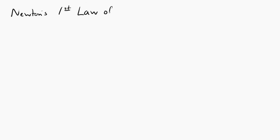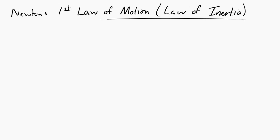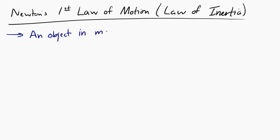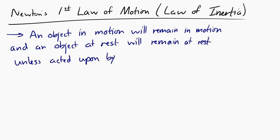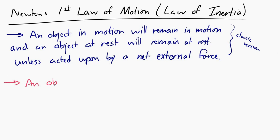Let's take a look at Newton's first law of motion, also called the law of inertia. A common way to state this law is: an object in motion will remain in motion and an object at rest will remain at rest unless acted upon by a net external force. Another way to state it would be: an object's velocity will be constant if there's no net force acting on it.